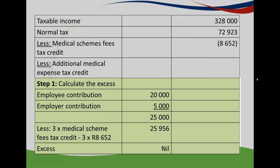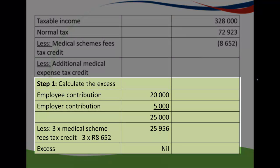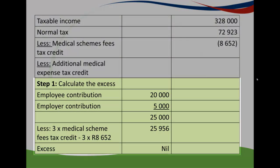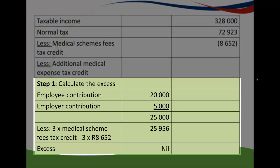So let's calculate the excess for Rose. Take the employee contribution of 20,000 plus the employer's contribution of 5,000, then deduct three times the medical schemes fees tax credit of 8,652 calculated in Part A. The excess works out to zero, because the three times medical schemes fees tax credit exceeds the contributions — and since the excess can never be negative, it is set to zero.